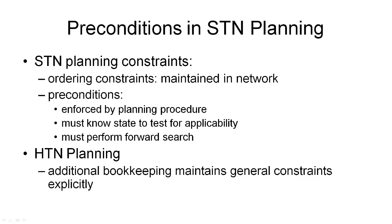In STN planning, as I have just described it, there were two types of constraints that were part of the representation and the procedure. The first type of constraint we've seen are the ordering constraints. And if you remember the definition of a task network consisting of nodes and edges, these edges represented the ordering constraints, so they were built into the representation of a task network. This means there was exactly one way in which ordering constraints between tasks could be handled.